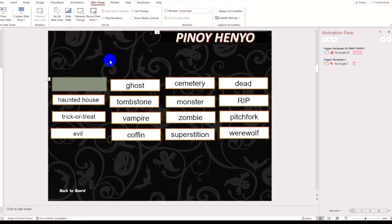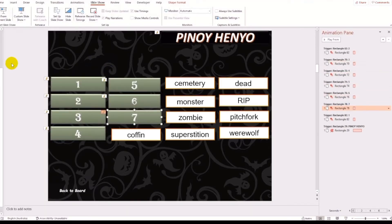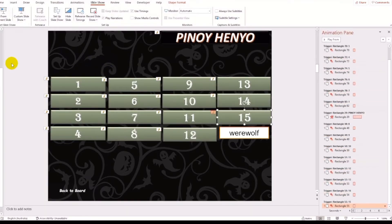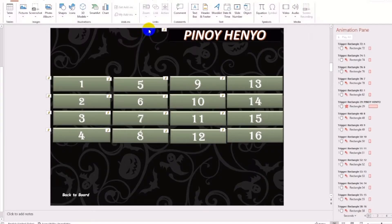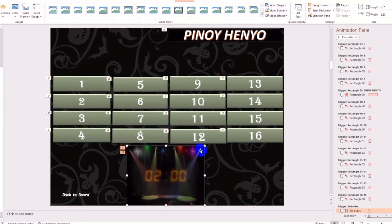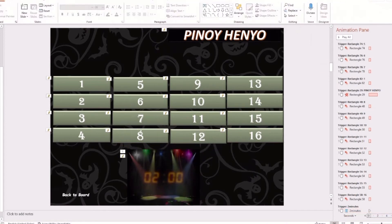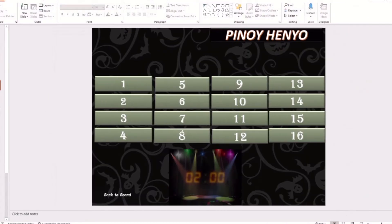And that's it. Now copy-paste this shape with the exit animation, put a number to it, and cover all words. Number three: set a timer. Just download a timer. For example, I want the players to play the Pinoy Henyo game for only two minutes, and insert this timer to the PowerPoint presentation — this will automatically play when clicked. And that's it. That's how easy I do my games.